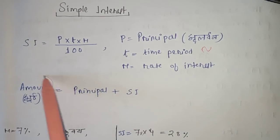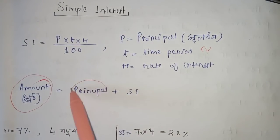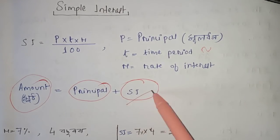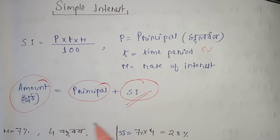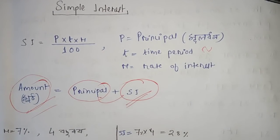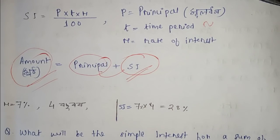The amount is a key concept. The amount relates to simple interest. The basic concept is to use the formula, and the problem is to solve the problem using it.